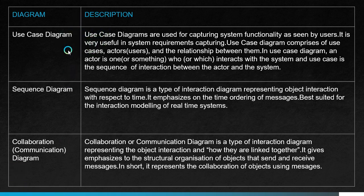Use case diagrams are used for capturing system functionality as seen by users, and are very useful in system requirements capturing. A use case diagram comprises use cases, actors, and relationships between them. An actor is one who interacts with the system, and a use case is a sequence of interactions between the actor and the system.